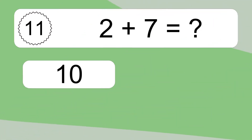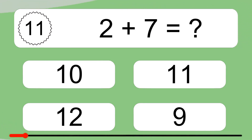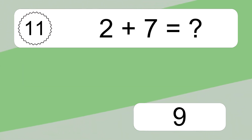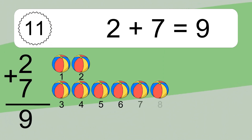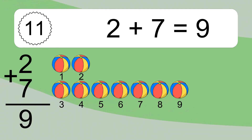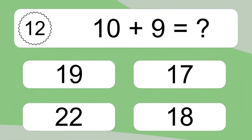Two plus seven equals what? Two plus seven equals nine. Let's count it: one, two, three, four, five, six, seven, eight, nine. Ten plus nine equals what?